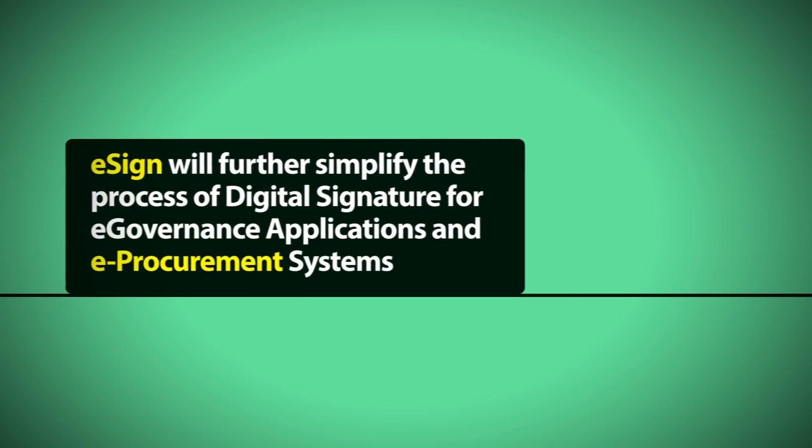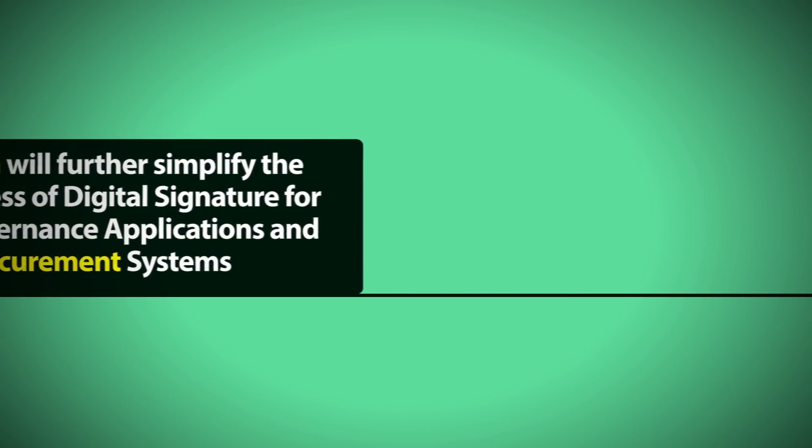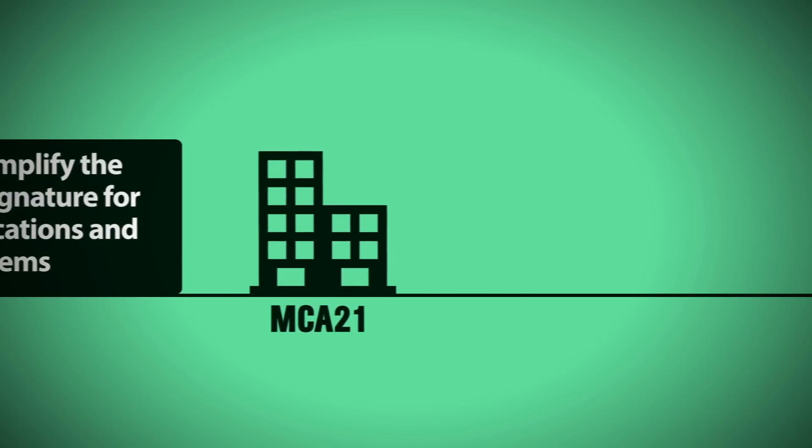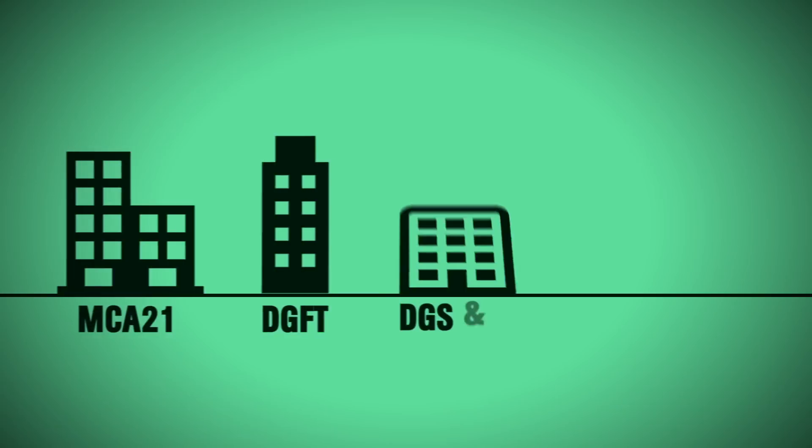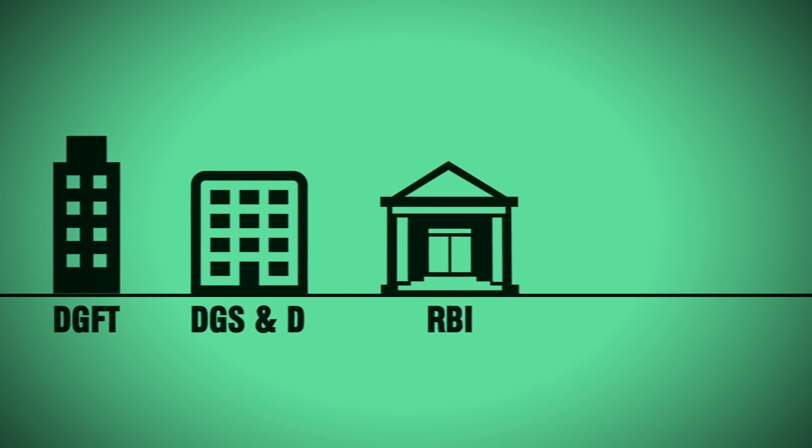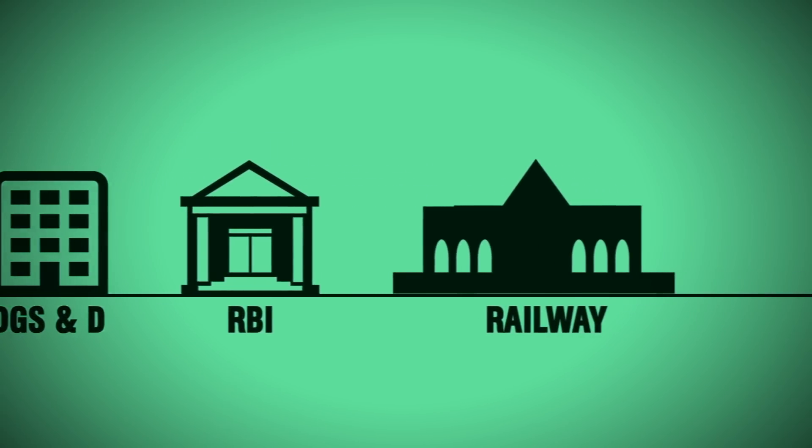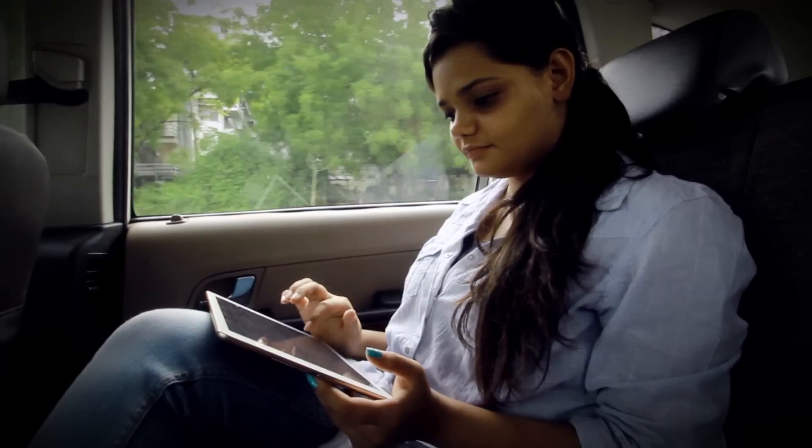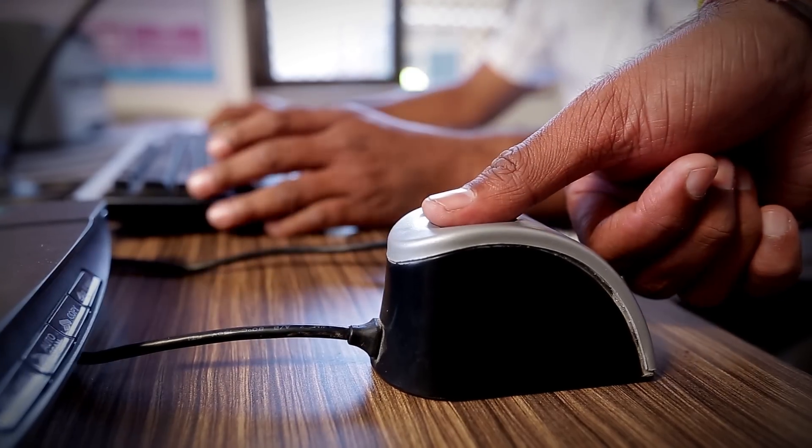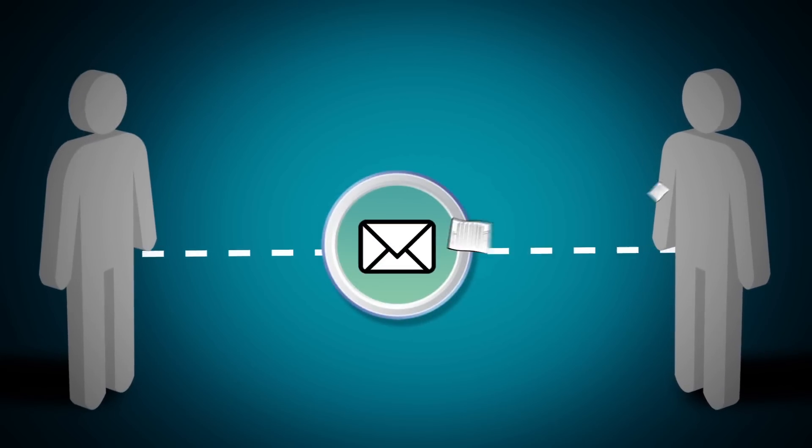E-sign will further simplify the process of digital signature for e-governance applications and e-procurement systems like MCA21, DGFT, DGSND, RBI, and Railway. Also, in order to ensure the privacy of the applicants, biometrics and digital signatures will not be stored under this service.